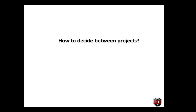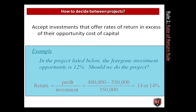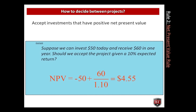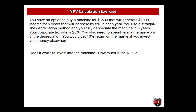Having the net present value calculated, the question becomes how to decide between projects. First rule: accept investments that offer rates of return in excess of their opportunity cost of capital. In the example listed, the foregone investment opportunity is 12%, but the calculated return is 14% — higher than the opportunity cost of capital — so yes, we should do the project. Second rule: accept investments that have positive net present value. For example, invest $50 today and receive $60 in one year with a 10% expected return — the net present value is positive, so we should accept the project.